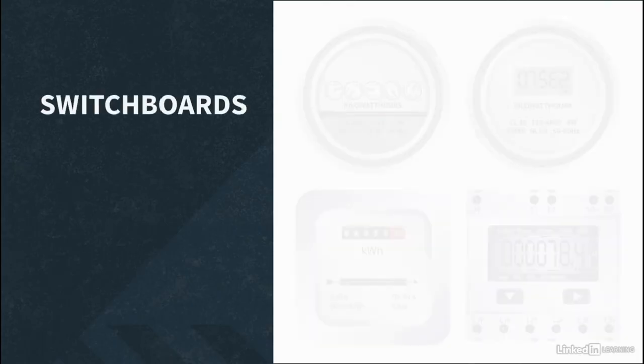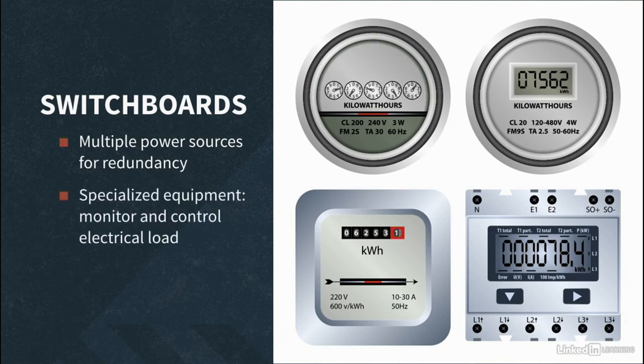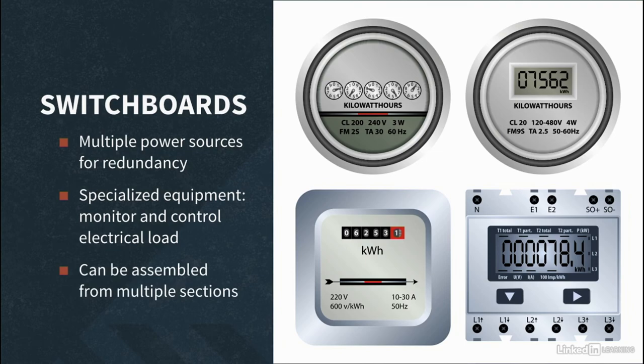Occasionally, switchboards may have more than one incoming power source to provide redundancy to critical power loads. Switchboards can also have specialized equipment in them that monitor and control loads that they serve. Power monitors and meters help the owner and operator know the amount of electricity they are using. Switchboards may also be made up of assembled pieces, also known as sections, ganged together to form one large switchboard assembly.